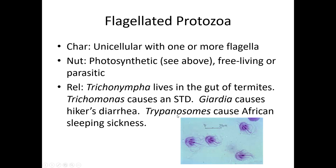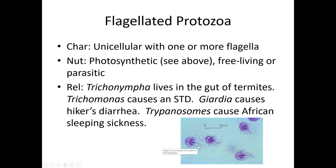Trypanosomes — including Trypanosoma brucei and loci — cause different problems, but one of them causes African sleeping sickness, called that because it's only transmitted in Africa by a bug called a tsetse fly. When it bites you it spits some of the trypanosoma into you, and then they destroy your red blood cells so you can't transport oxygen and you get really tired. Eventually you're so tired that you pretty much can't do anything and then you die — so if this isn't treated, it's fatal.